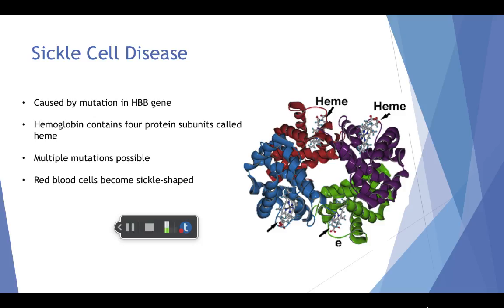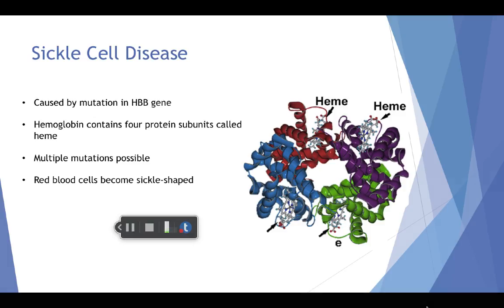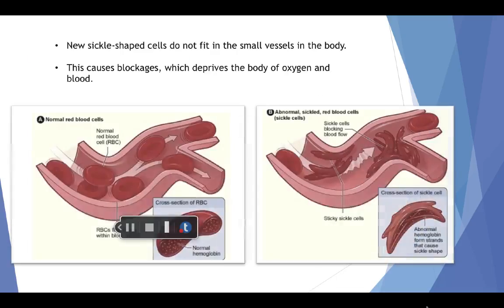Rod-like structures of hemoglobin that aggregate after unloading oxygen is what forces red blood cells to take the sickle shape. Cells shaped like this will die prematurely, which could cause anemia. These sickle-shaped red blood cells can also get stuck in small blood vessels, causing deprivation of blood and oxygen to certain areas of the body.